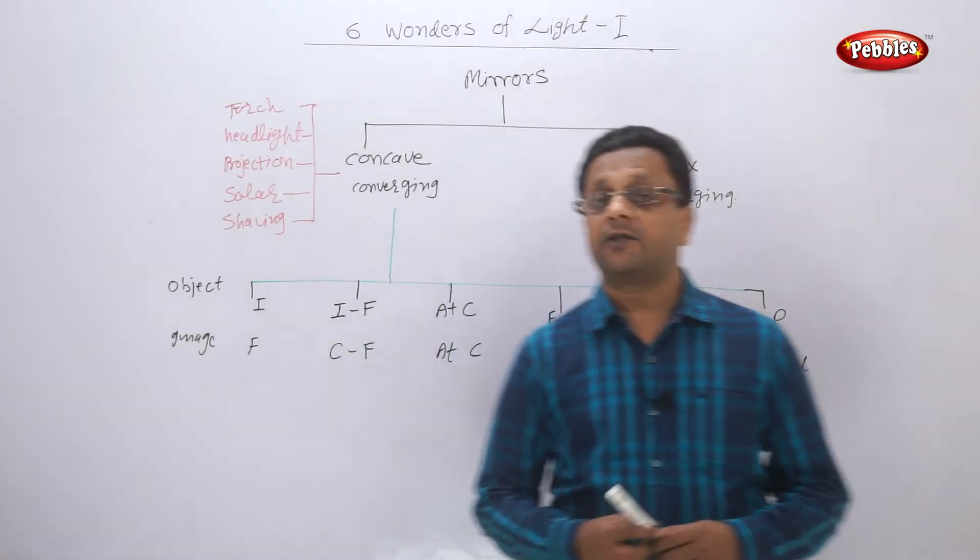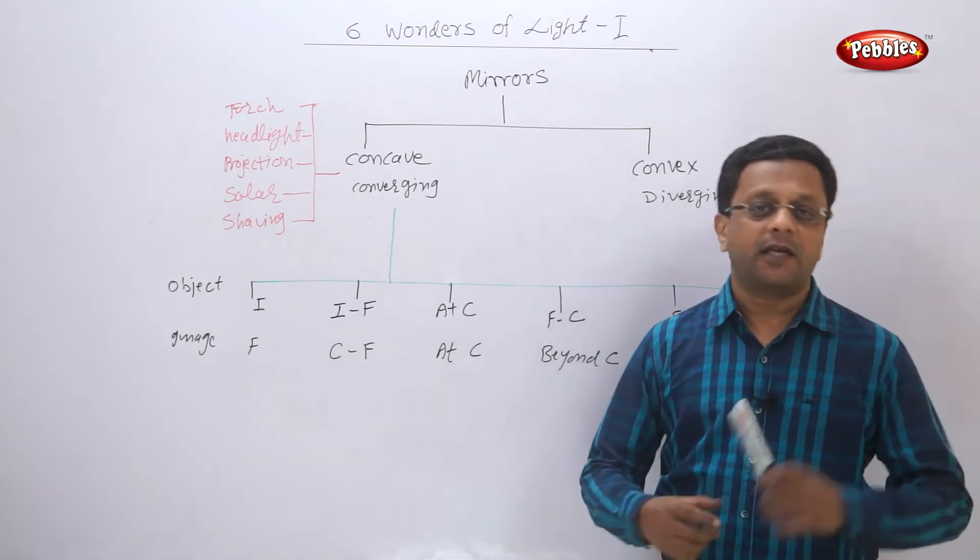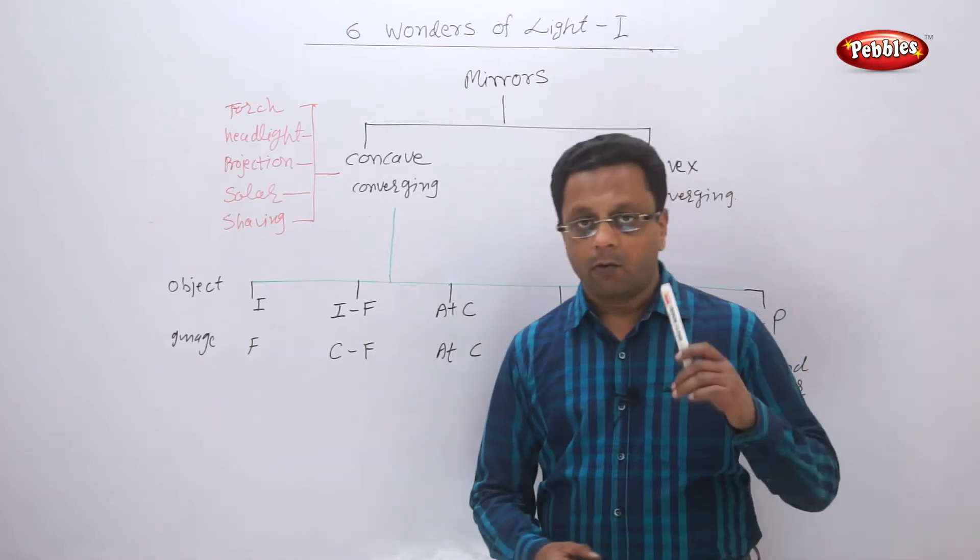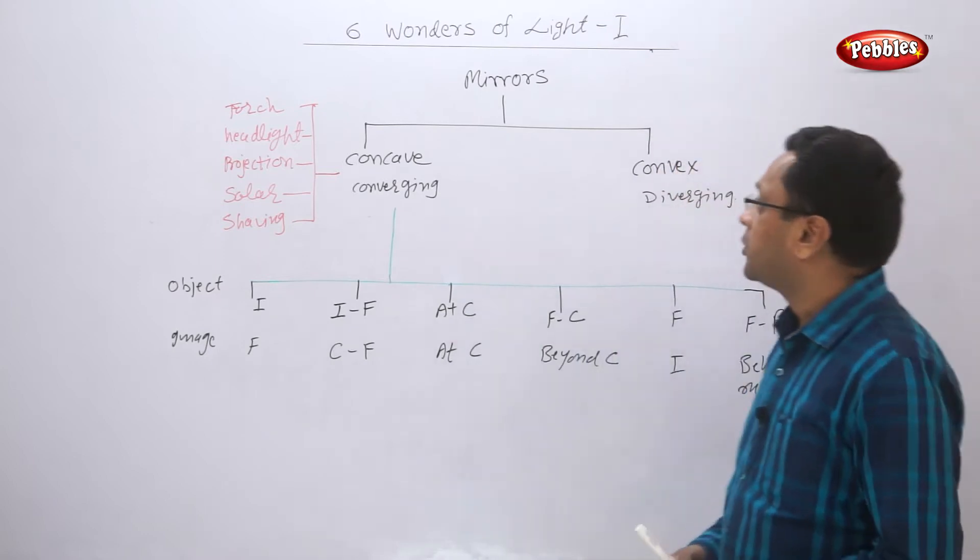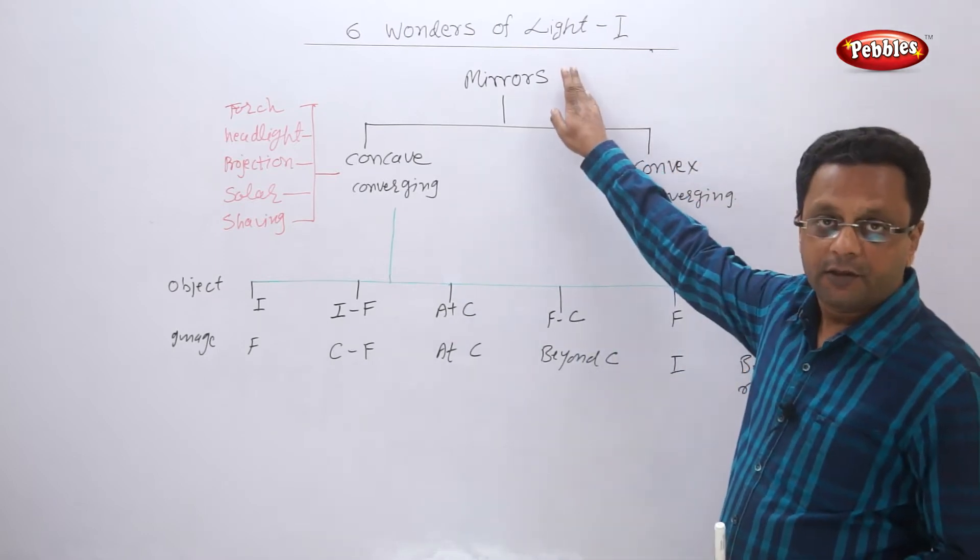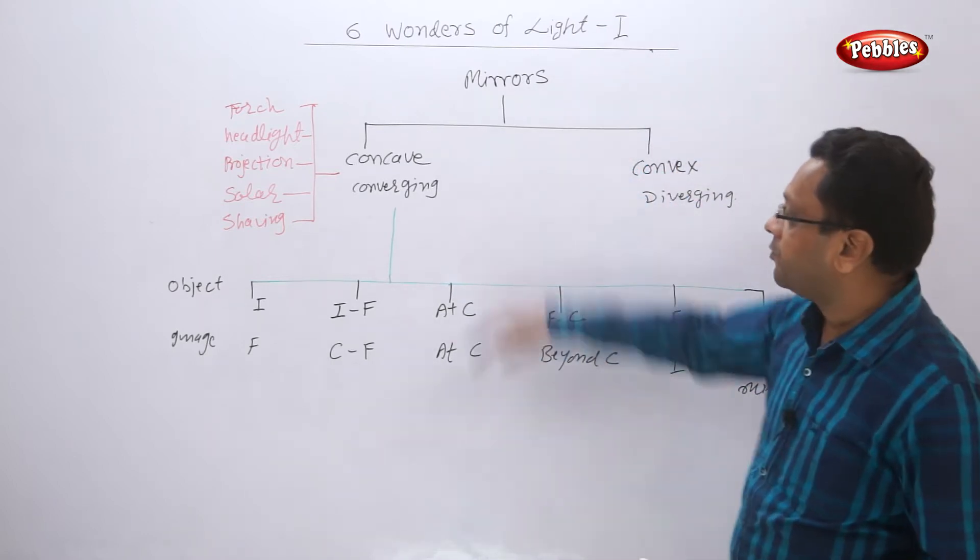Before going to the question and answer session, let us quickly summarize this chapter. What we have learned: first of all, we learned about mirrors. The mirrors are of two types - one is the concave mirror and one is the convex mirror.